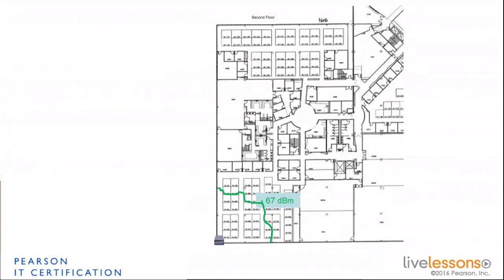Suppose you start from the corner. First, decide what is the edge of your cell — what signal level do you want at the cell edge. That signal level is driven by the data rate you want to achieve there. Suppose you designed for a standard voice deployment and determined that the cell edge should be at minus 67 dBm. That's the RSSI measured on the particular device you're using for the site survey — your client. Remember, you have to survey with the client you expect, and if you can't, bring the client alongside the laptop to understand the signal difference, so you can use the laptop to imitate what the client would see.